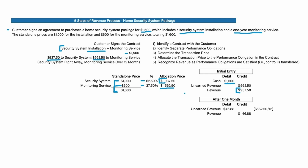Thinking about the journal entries: we received the full $1,500 at the beginning, but we've only earned the revenue from the security system installation, so we recognize $937.50 as revenue immediately. The money from the monitoring service is unearned revenue — a liability. After the first month, we provided one month of monitoring service, so we take one-twelfth of $562.50, debit it out of unearned revenue, and credit revenue. To summarize, we took the $1,500 transaction price and allocated it between the two performance obligations based on their standalone price percentages.